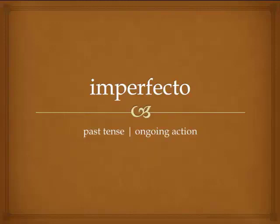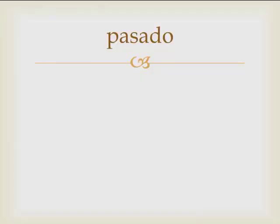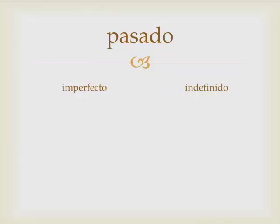The imperfecto is a past tense which communicates an ongoing action in the past. Pasado means past, and the pasado in Spanish has two past tenses: the pretérito imperfecto and the pretérito indefinido. Pretérito is another word for pasado — they are synonyms. To keep it simple, we're just going to call them the imperfecto or the indefinido. Those are both pasado, past tense.